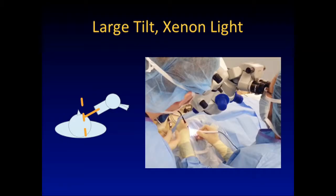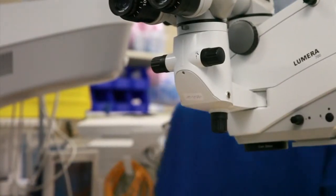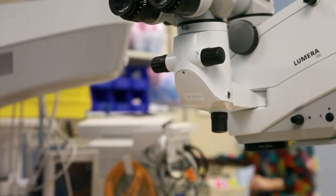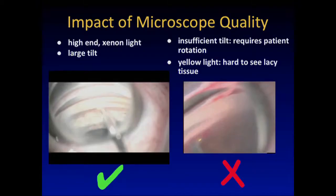Here's my hard-won wisdom. First of all, you have to visualize. You have to have an excellent microscope — if you don't have a good microscope and you don't see what you're doing, you will not get good outcomes. You must have good tilt, xenon light, large tilt. The only microscope available in the United States that does that, I think, is the Zeiss Lumera. But if you can get a xenon light source, you should be fine.